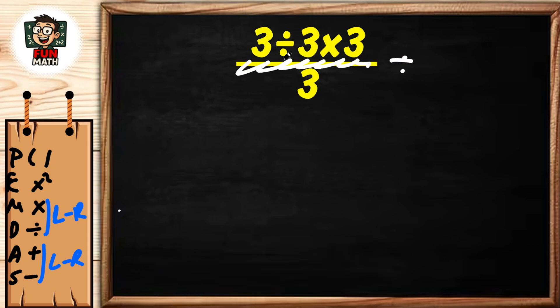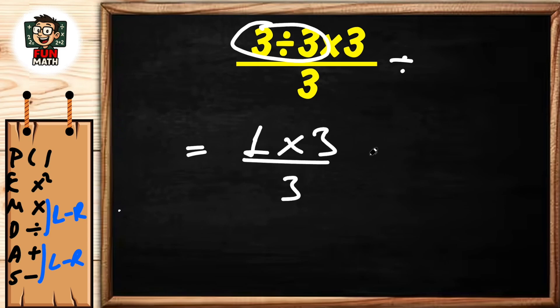The upper part of the fraction is done first. Here we have division and multiplication. The division on the left is done first: 3 divided by 3 equals 1. Now multiplication: 1 times 3 equals 3.